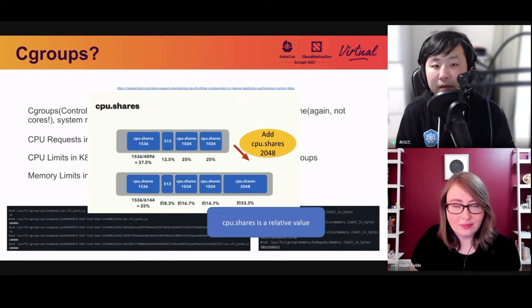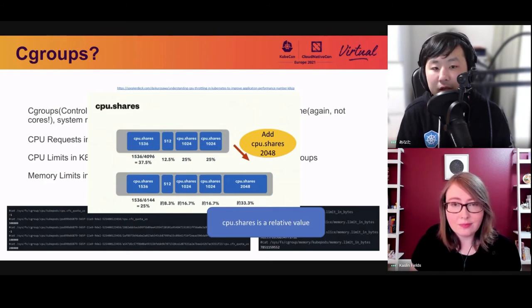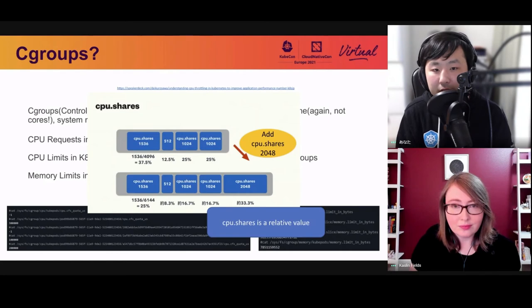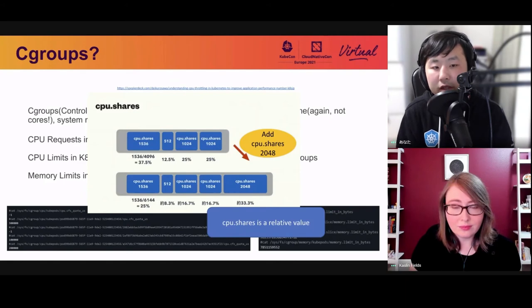CPU share is a relative value. If there are four existing containers with 1.5, 0.5, 1, and 1 CPU on each, they share the whole allocatable CPU on the node. When CPU has enough space and there's no CPU limit, CPU resource can be overcommitted. But when CPU is busy, the CPU request value is used to ensure each application has enough CPU for itself. If another application with two CPU requests is assigned to the node, Kubernetes recalculates the percentage and reassigns all allocated resources for busy periods.